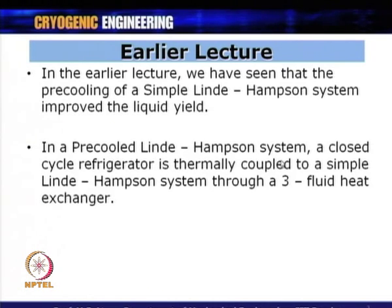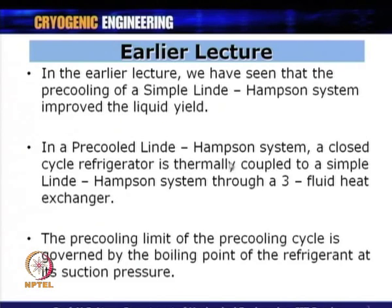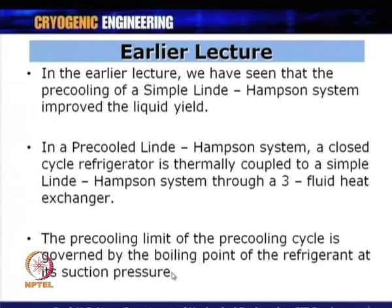In a pre-cooled Linde-Hampson system, a closed cycle refrigerator is thermally coupled to a simple Linde-Hampson system through a three-fluid heat exchanger. The pre-cooling limit of the pre-cooling cycle is governed by the boiling point of the refrigerant at its suction pressure. This refrigerant moves in a closed cycle manner, and its boiling point at the low suction pressure determines the lowest possible pre-cooling temperature for the Linde-Hampson cycle.